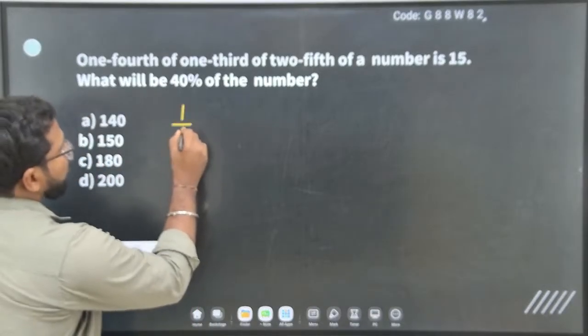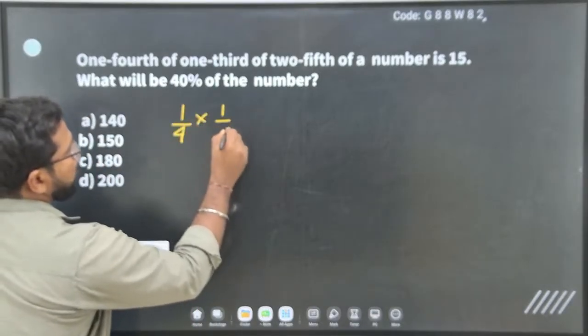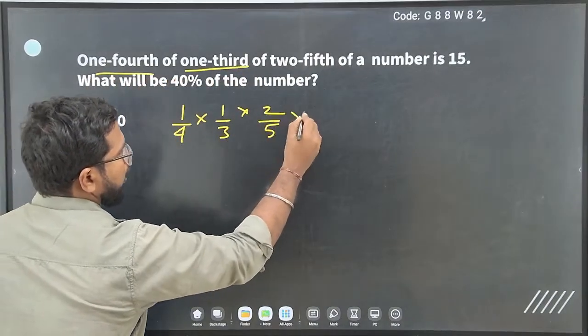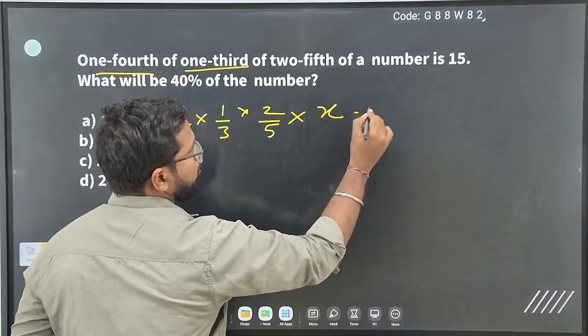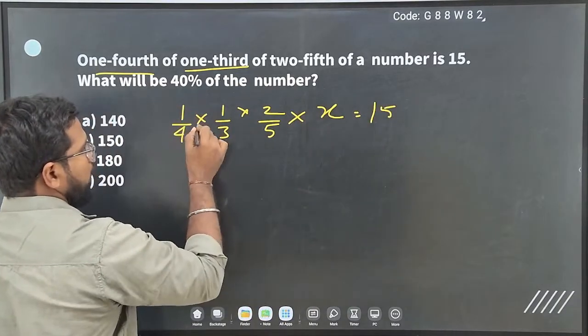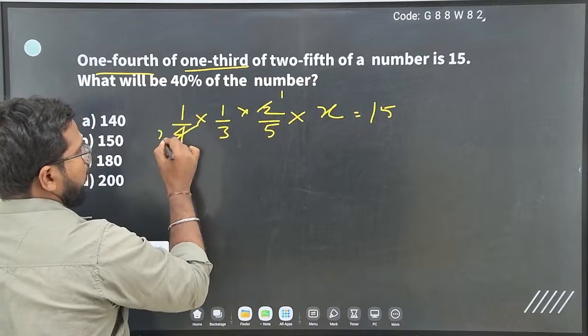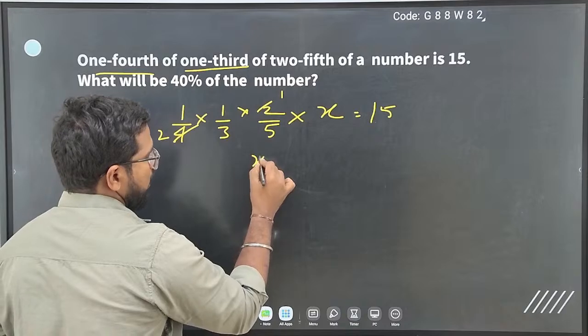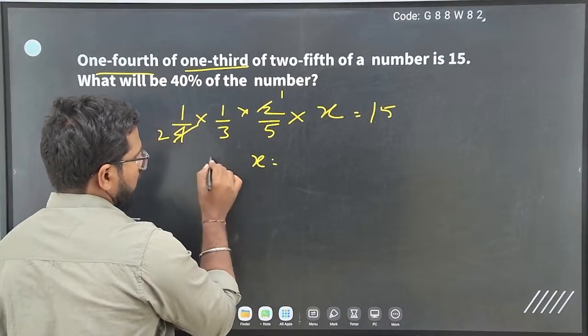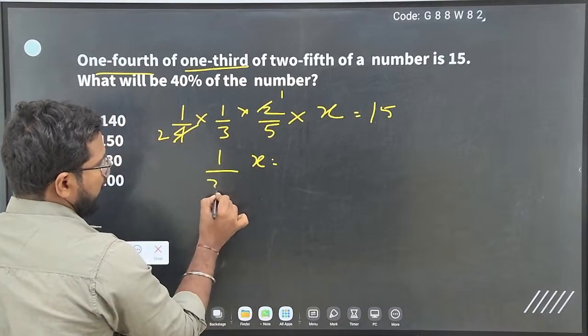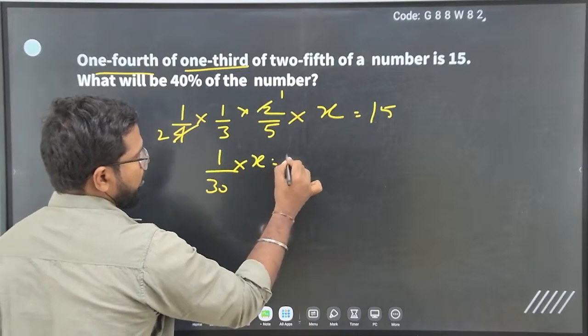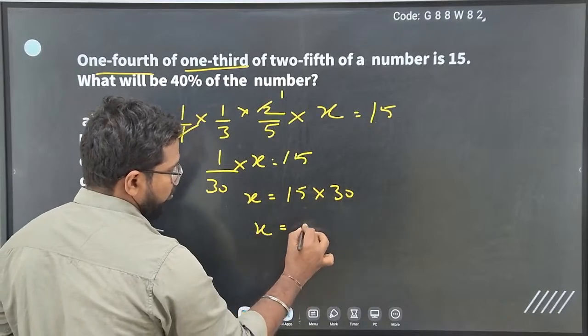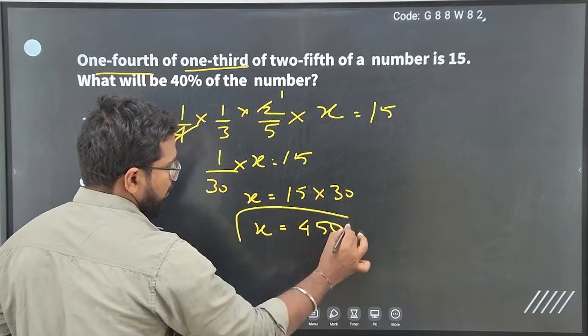So one-fourth of one-third, one by four, one by three, two by five into x is going to be my number. So it will cancel, two and cancel. Two into three into five, which is going to be my number. Six into five, thirty. So x is equal to, sorry, one by thirty into x is equal to fifteen. X is equal to fifteen into thirty. X value is four hundred and fifty.